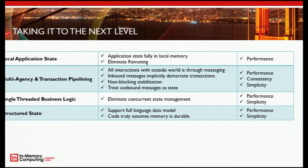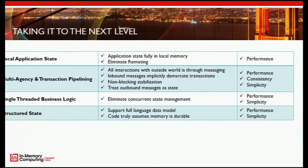For example, make a room reservation — go update your reservation object in memory, and that change can be replicated to your backups while you're doing the next reservation update. There's no reason you can't do that, as long as the world doesn't know the reservation was made until stabilization is complete. That is critical. All interactions with the world need to happen through messaging. You treat outbound messages as state — as soon as your state is stabilized, you tell the world. If you couldn't stabilize, the transaction failed and the world never knew.